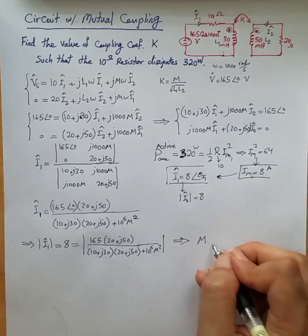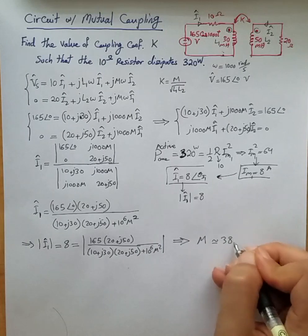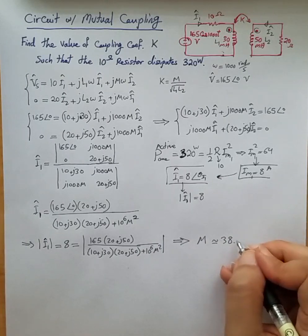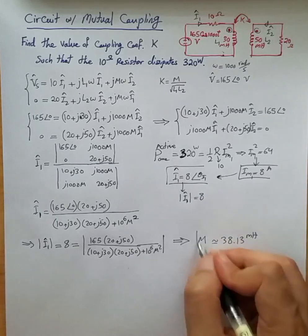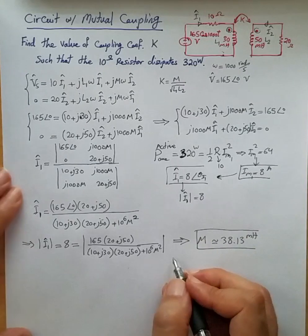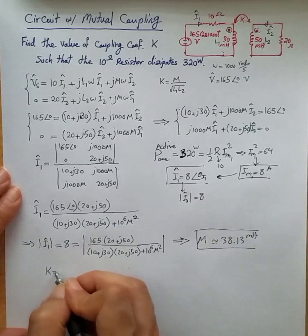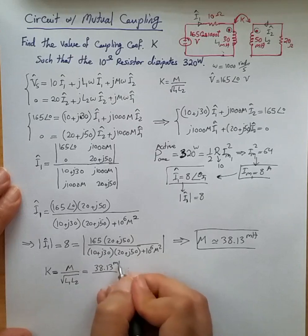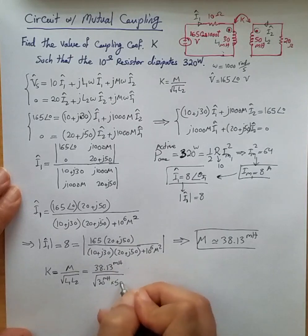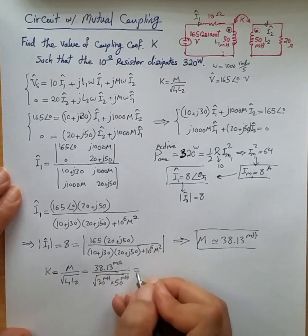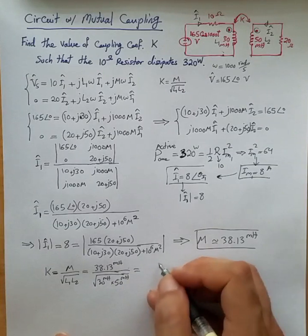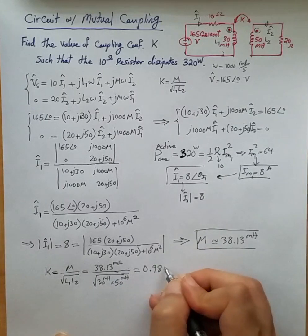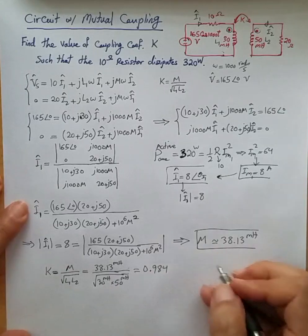approximately 38.13 millihenries. As soon as you find the value of M, the rest is easy because the coupling coefficient is just M divided by the square root of L1L2. So it is 38.13 mH divided by the square root of 30 mH times 50 mH, and if you calculate this you end up with 0.98, roughly, for the coupling coefficient k.